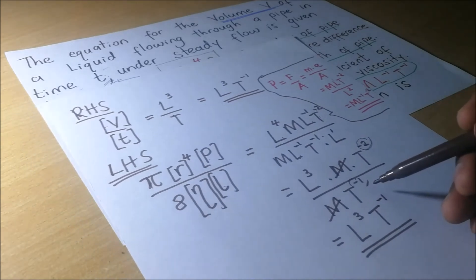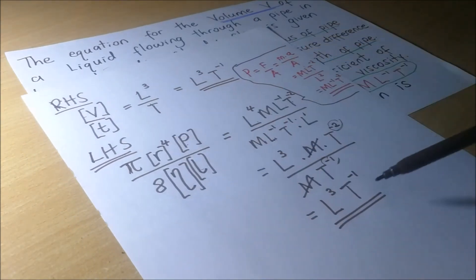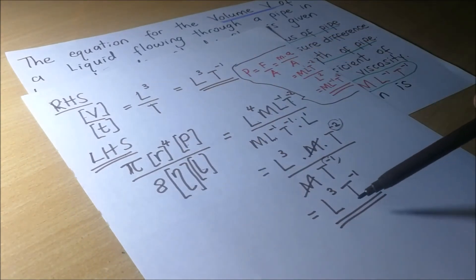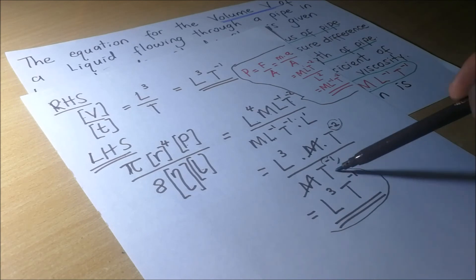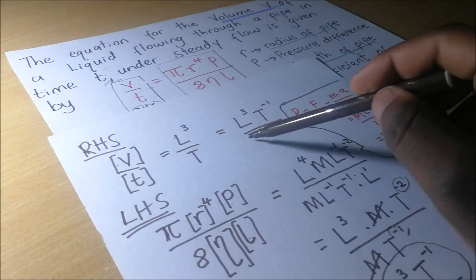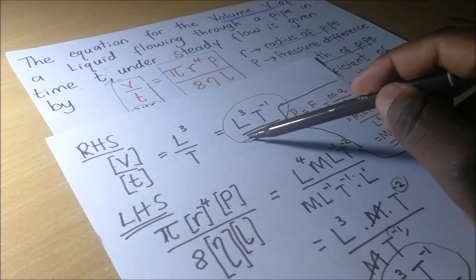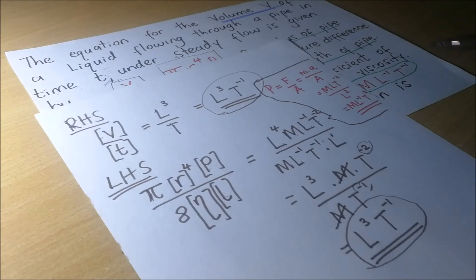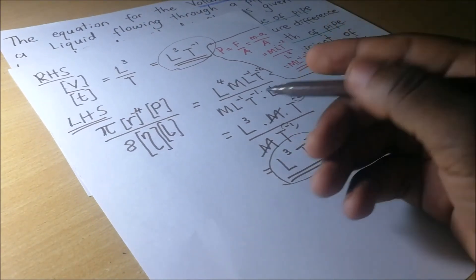These are the dimensions on the left-hand side. Now realize that the dimensions on the left-hand side are the same as the dimensions on the right-hand side, and so after realizing that fact, we shall conclude by saying the equation is dimensionally consistent. And that right there is our answer.